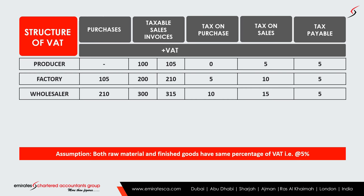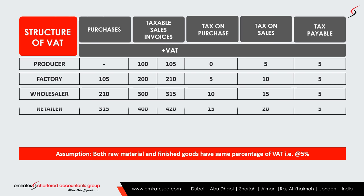Now the chain extends to the wholesaler. The wholesaler bought the juice for 200 plus tax, totaling 210. Suppose their selling price is 300 dirhams — they are selling to the retailer for 300 dirhams. With 5% tax, that is 315. The tax on sale value is 15 dirhams and tax on purchase value is 10 dirhams. So the excess amount the wholesaler collected is 15 minus 10 — the wholesaler pays 5 dirhams to the authority.